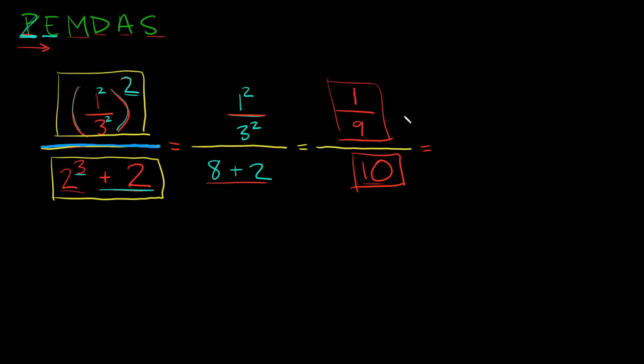So this is just one big fraction now. So on top in our numerator we have one ninth and that's divided by ten. So I'm going to rewrite that as just a normal division problem. So our numerator one ninth divided by the denominator ten.